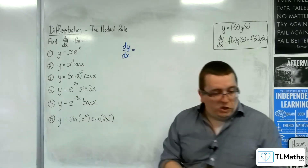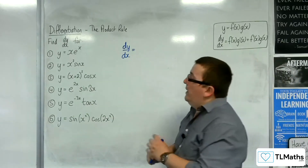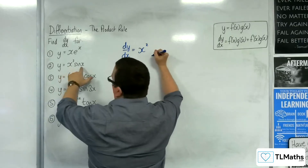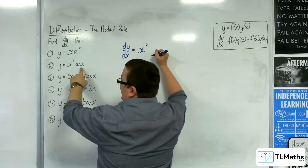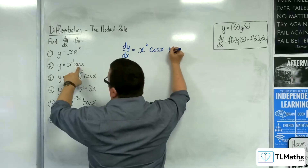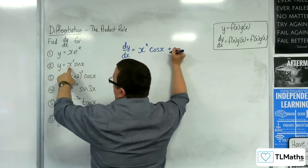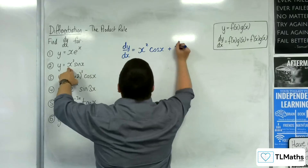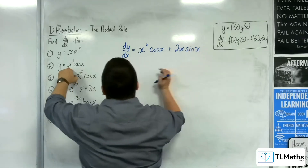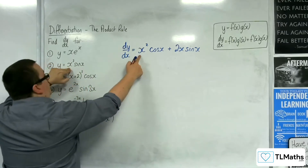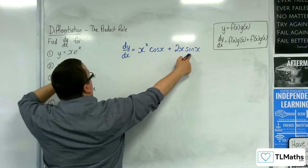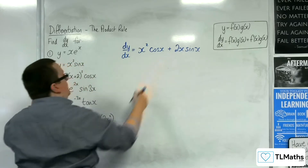Let's try number two. We've got x squared sine x. So, we've got the first — x squared — times the derivative of the second. Sine x differentiates to cosine x, plus the second times the derivative of the first. Now, the derivative of the first is 2x, so 2x sine x. So, the first times the derivative of the second, plus the second times the derivative of the first.